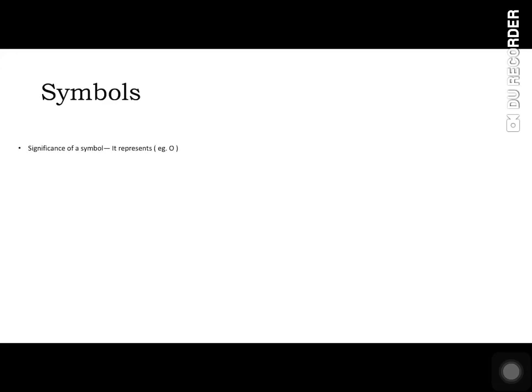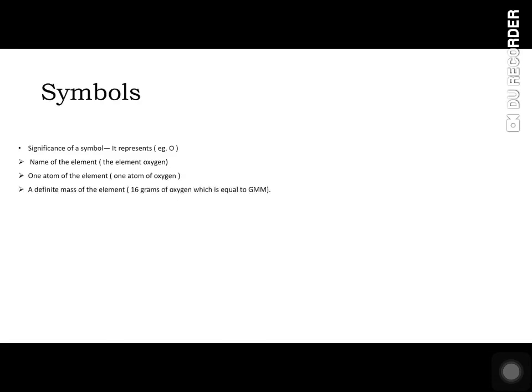So what does a symbol signify? It represents the name of the element — for example, O represents the element oxygen. It also represents one atom of that element, and a definite mass of the element, which is sixteen grams of oxygen, equal to its gram molecular mass. Thus, a symbol is a short form or abbreviation used for the name of a specific element or its atom.